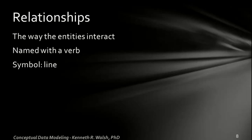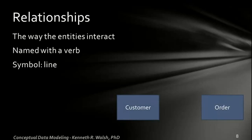Now let's look at relationships. Relationships are the way the entities interact with each other. These are named with a verb and the symbol is the line. Now note, there really are a lot of different standards for documenting relationships. So this example uses the line, but you may see other ways of writing it. Here's a couple of entities we saw before. The customer and the order. But now we're going to say they are related to each other.